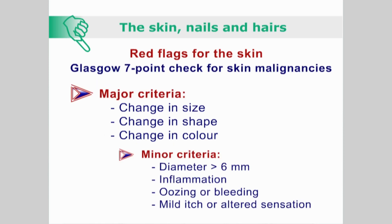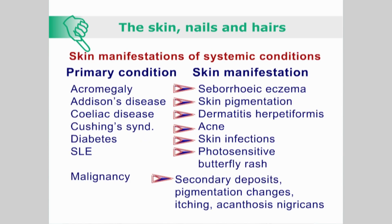The major criteria of the Glasgow 7-point checklist are change in size, change in shape, and change in colour. The minor criteria are diameter greater than 6 mm, inflammation, oozing or bleeding, and mild itch or altered sensation. In addition, consider serious systemic pathologies which may manifest as skin conditions. Further details are found in the slideshow.